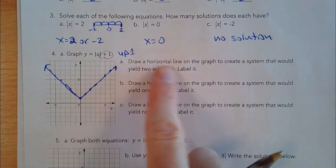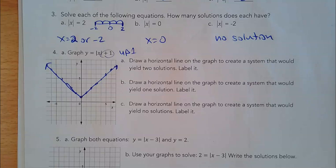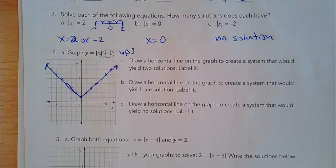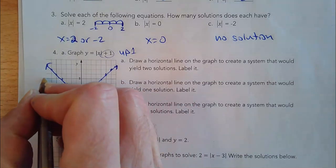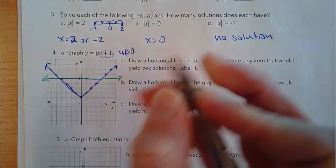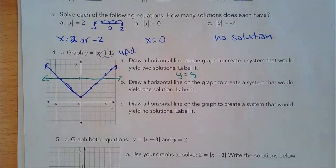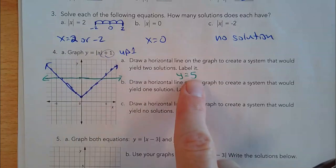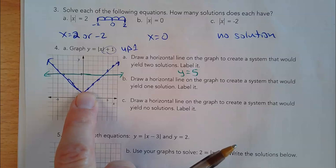Now draw a horizontal line on the graph to create a system that would give two solutions — a horizontal line that hits the graph at two places. There are lots of ways to do it. If I go at y equals 5, drawing a horizontal line there hits it twice. So if I set the absolute value of x plus 1 equal to 5, I'd have two solutions because those two graphs touch each other twice.